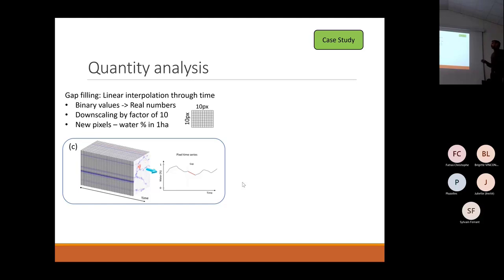To do this, we converted the binary values into real numbers, downscaling the maps by a factor of 10 so each new pixel is composed of 10 by 10 pixels, representing the water percentage in one hectare.